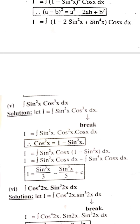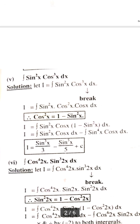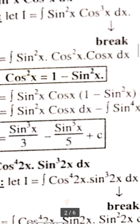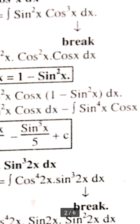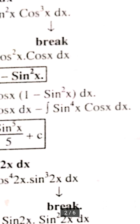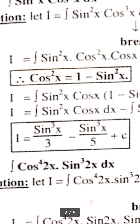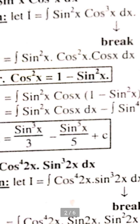Number 5: integration of sin²x · cos³x dx. We break cos³x as cos²x · cosx, and substitute cos²x = 1 − sin²x. Multiplying through, we get integration of sin²x · cosx dx − integration of sin⁴x · cosx dx. The answer is sin³x/3 − sin⁵x/5 + C.